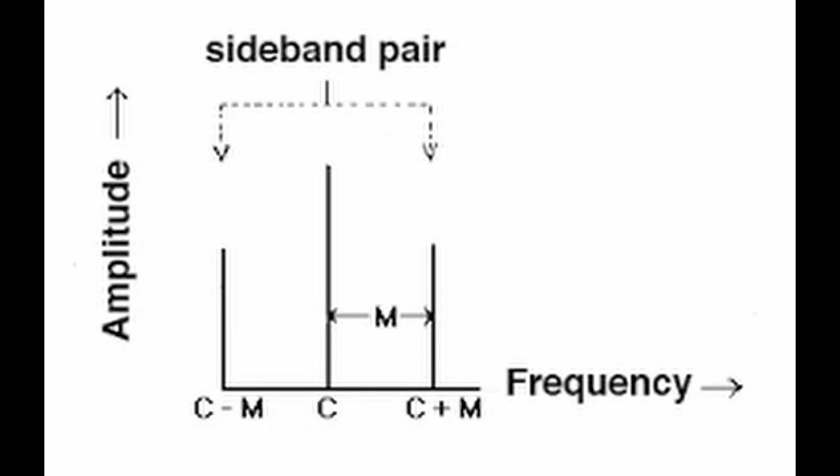In electronics, ring modulation is a signal processing function in which two signals are combined. One signal, called the carrier, is typically a sine wave or another simple waveform. The other signal is typically more complicated and is called the modulator signal. In the most basic sense, two signals are mixed and new signals are produced made up of the sum and the difference of the original signal frequencies.